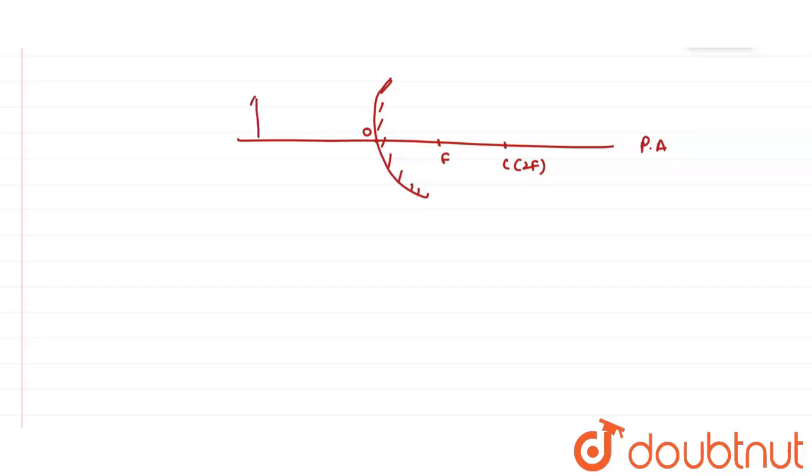Now I am taking the object in front of this mirror. Suppose this is my object, object AB. Now we know there are two rays incident on this mirror. First is parallel to the principal axis, and the ray which is parallel to the principal axis is passing from focal length.